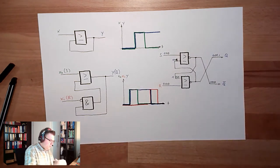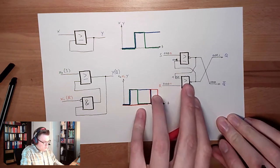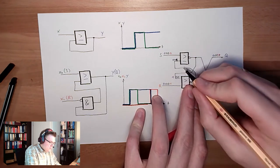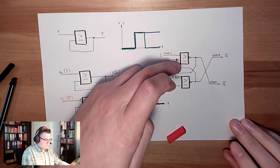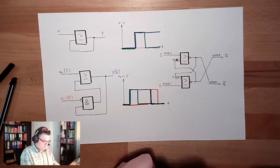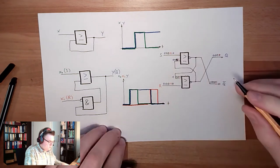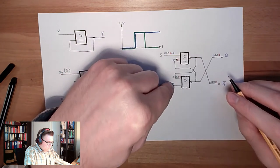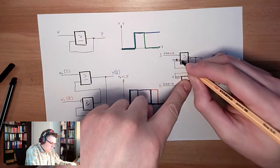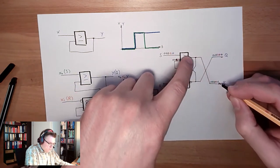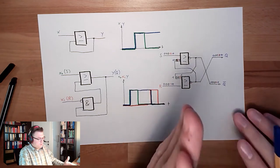Now the reset line gets one, this stays at zero. This OR is fulfilled now — here is one, here is zero, we get zero. If this is zero and this is zero: two zeros, zero inverted is one. Here we have one — perfect, we deleted the memory. Then we go back to zero and zero. This will stay one here, so we stay at zero here; both are zero, we stay at one on the other side. It's exactly the same situation as we had at the beginning. This is a memory.